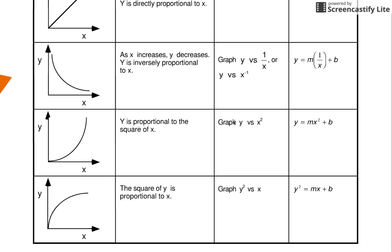Now this is where it gets a little different. You might have wondered why this column is called the linearized column — it's because now the graphs aren't actually straight lines anymore. There are many different mathematical equations that can give you curves, and that's what we're talking about here. If you end up seeing a graph where as x gets bigger, the y value gets smaller and smaller, what you're looking at is what we call an inversely proportional relationship — as x gets bigger, y gets smaller.